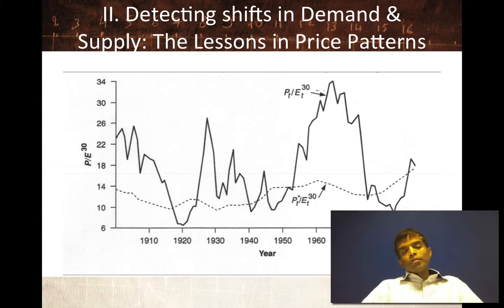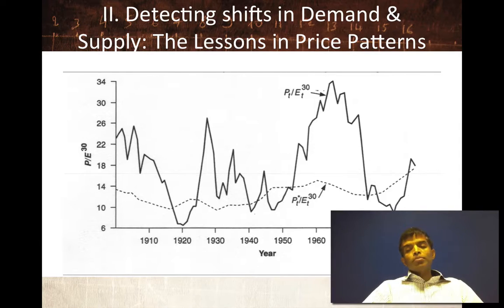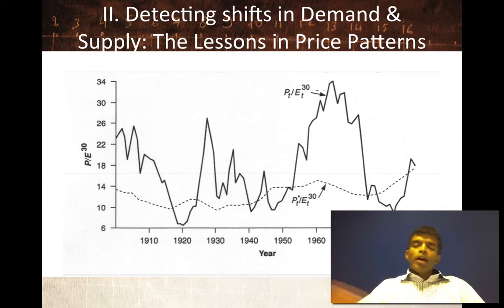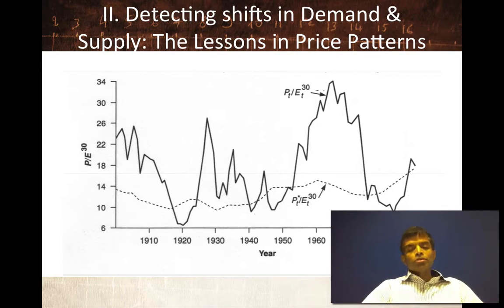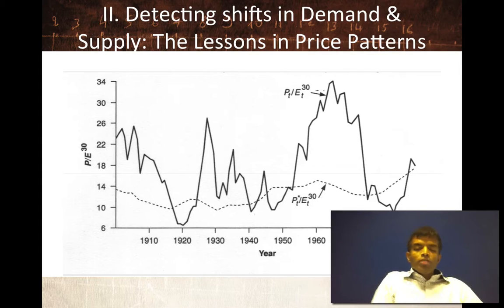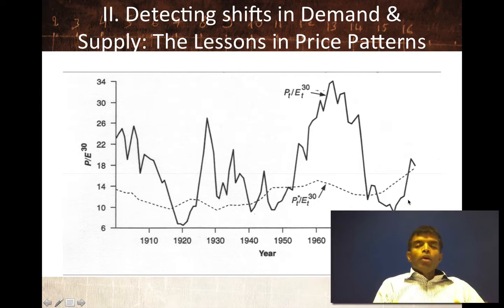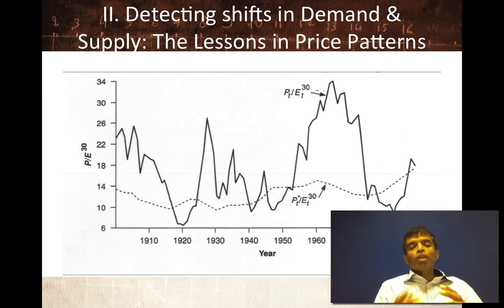The second set of technical indicators tries to detect shifts in demand and supply before they happen. For instance, there are people who look at normalized P/E ratios — they look at average earnings over time and what multiple stocks are trading at right now. If stocks are trading at a much higher multiple of earnings than the historic norm, they're considered overpriced; if below, they're underpriced. You are trying to detect shifts in demand and supply using a fundamental indicator that tells you something is going to change.